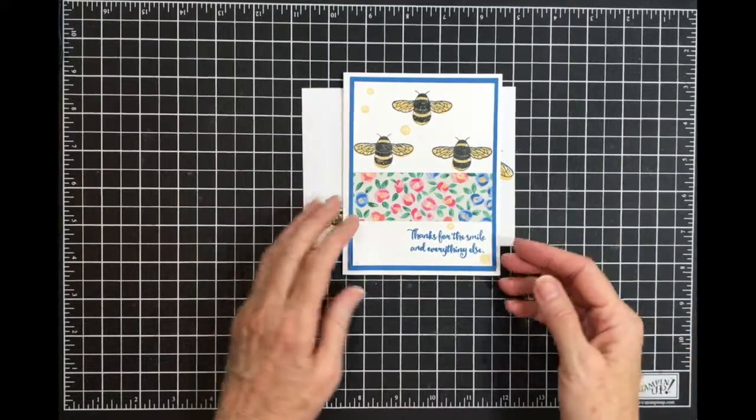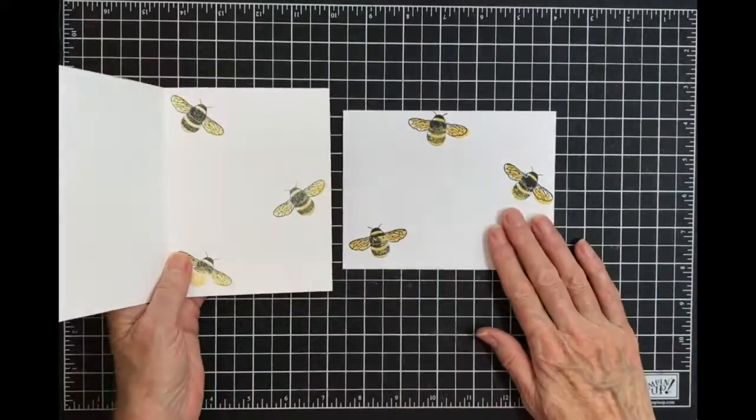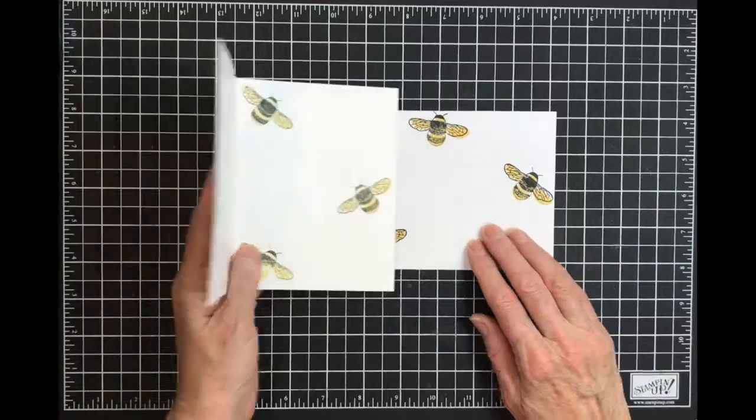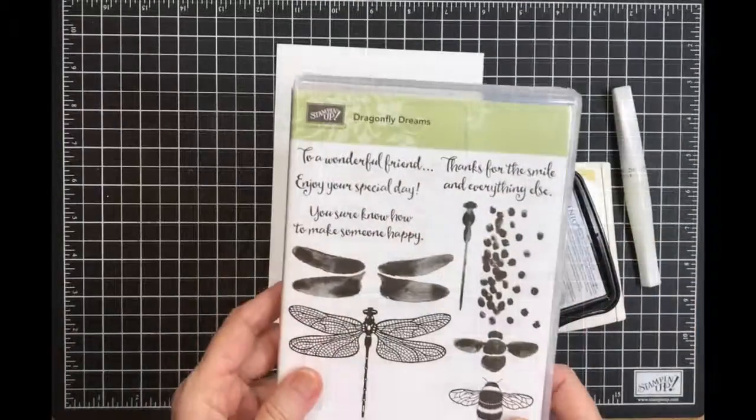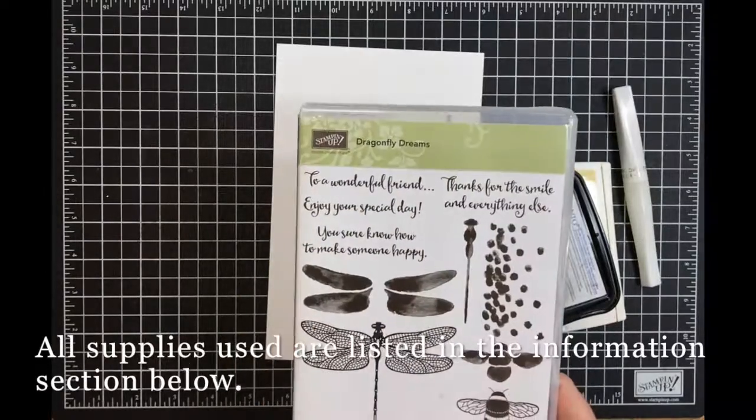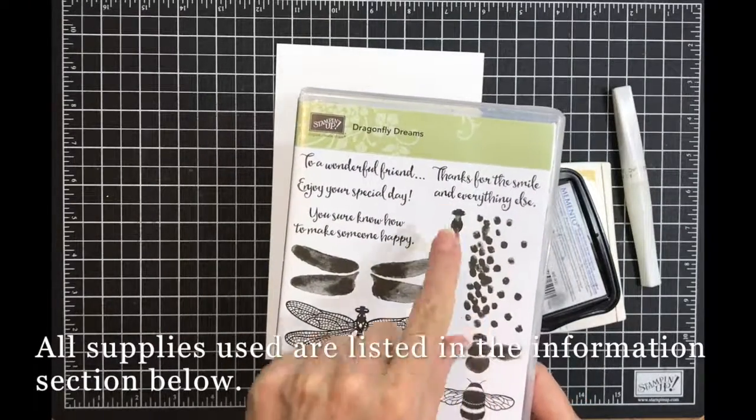Hi ladies, look at this great card. We're going to do the inside and the envelope. Join me in the craft room and I'll show you how. Today's card uses Dragonfly Dreams, and I'm specifically using the two bees and the thanks for the smile.